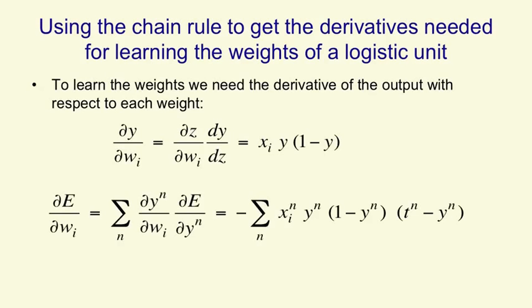And so we now have the learning rule for a logistic neuron. We've got dy by dw, and all we need to do is use the chain rule once more and multiply it by dE by dy. And we get something that looks very like the delta rule.